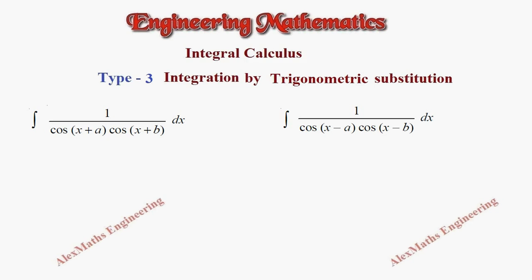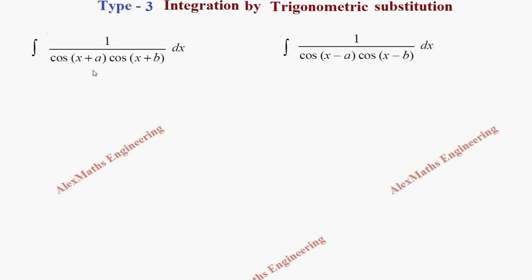Hi students, this is Alex. In this video we are going to solve an integration problem by trigonometric substitution. Let's take the first problem: the numerator is 1 and the denominator is cos(x+a) into cos(x+b).